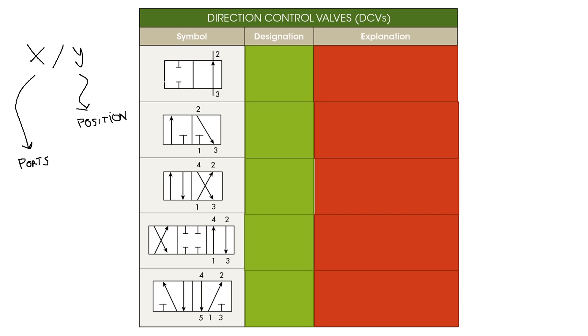So the first DCV is fairly simple. We see that we have two positions, so we have two squares. This is square number one, this is square number two, and we also have two ports: port number two and port number three.